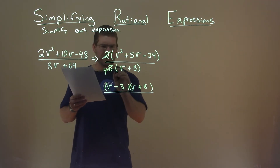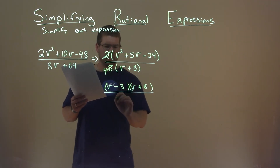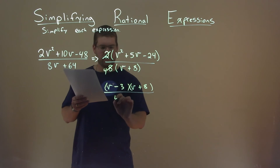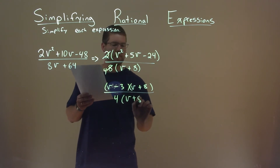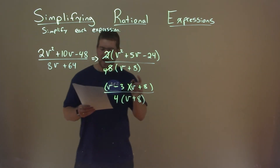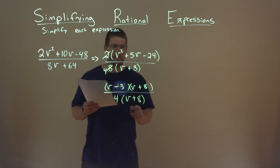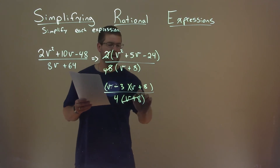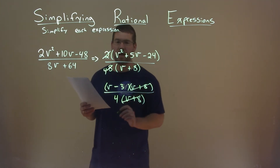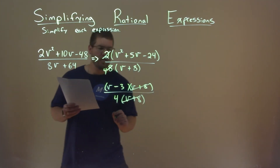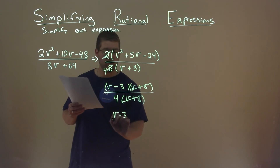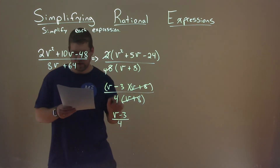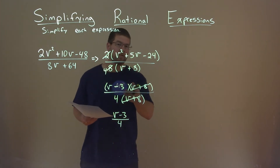For the denominator, just bring it down — nothing to really break down here, we have 4 and then v plus 8. But now, hopefully, you can see the v plus 8 can cancel. So that leaves us with the numerator of v minus 3 over the denominator of 4, and that is our final answer.